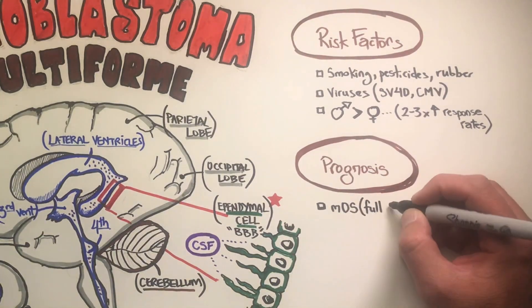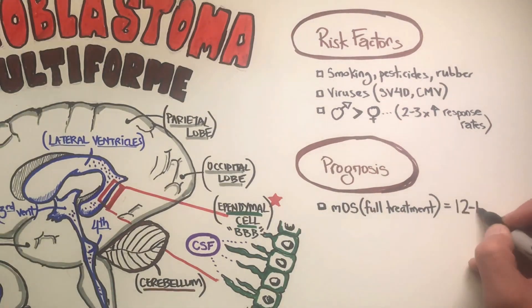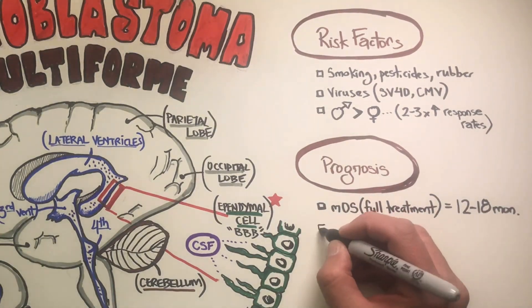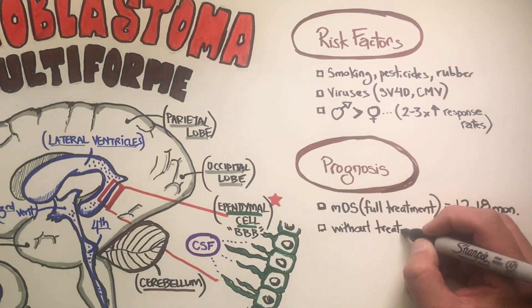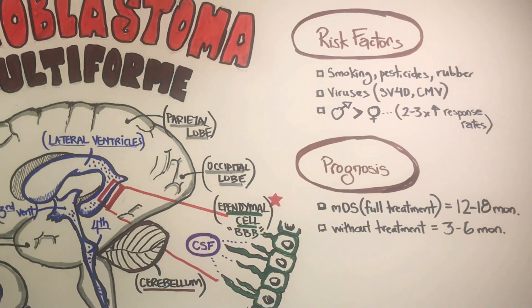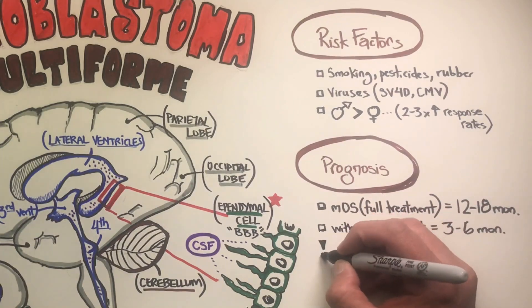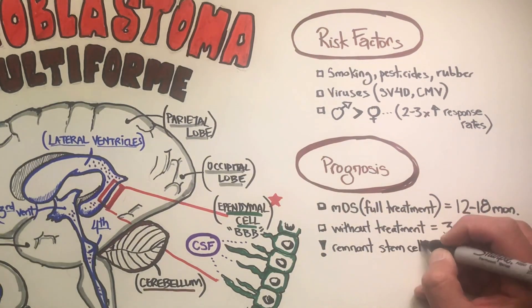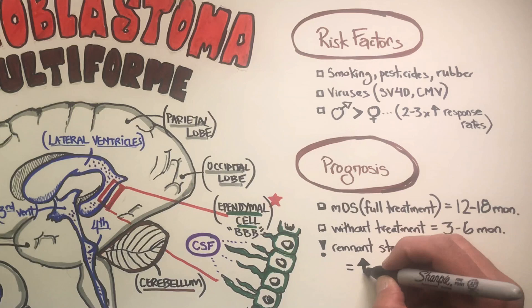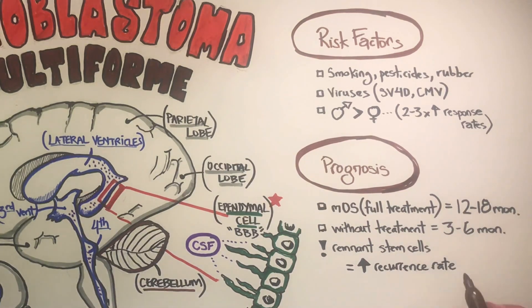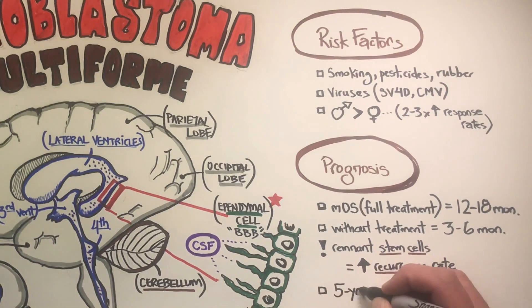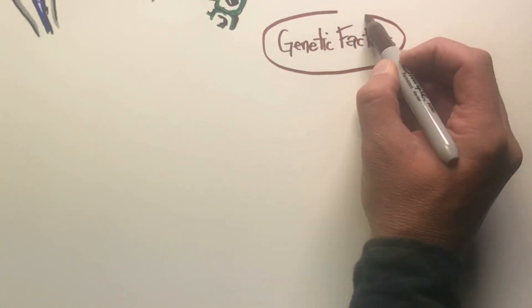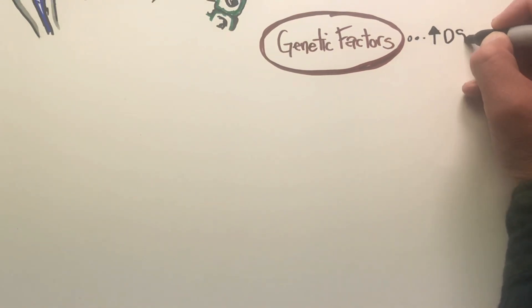The prognosis, as many of you may know, is not very high. The median overall survival is a year to a year and a half, and without treatment it's only three to six months. So the treatment does extend life. The problem with the prognosis is also a very high recurrence rate, because it's very hard to eradicate all of the remnant stem cells in the area from either surgery or other procedures. The five-year overall survival is three to five percent, so unfortunately only a small group of individuals reach five years after their initial diagnosis.